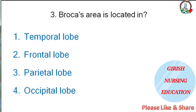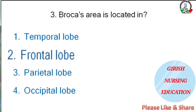Broca's area is located in — temporal lobe, frontal lobe, parietal lobe, or occipital lobe. The correct answer is frontal lobe.